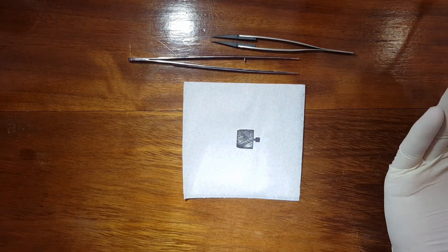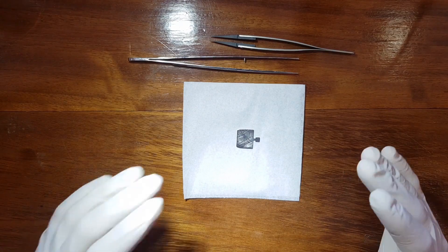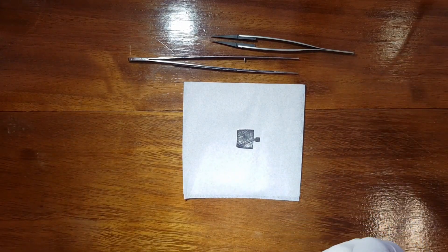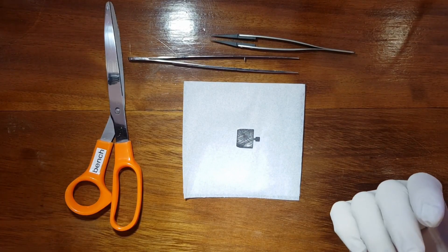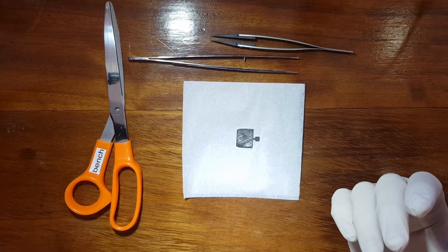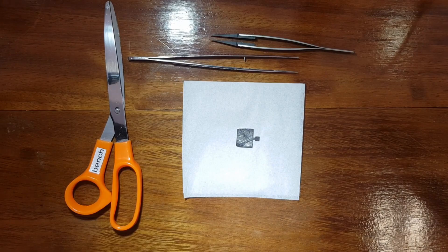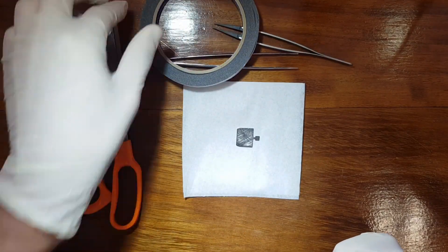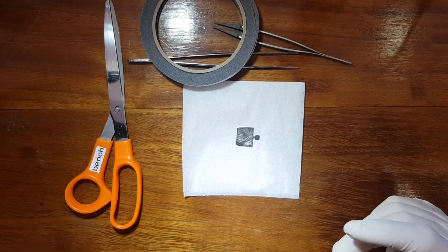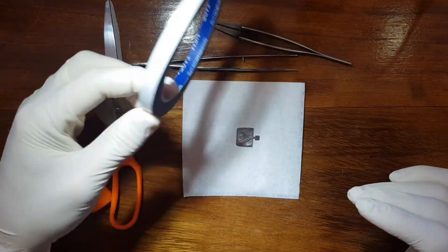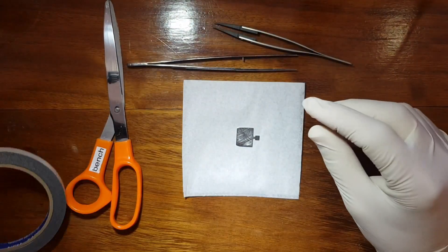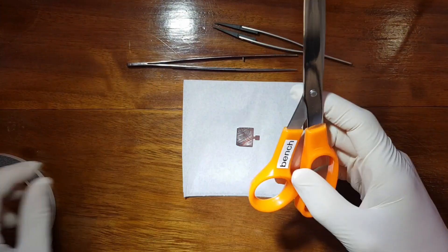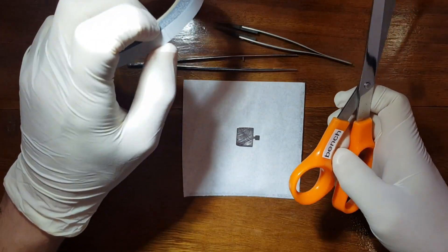Before we can do that we have to prep the samples, which is the core of this video. Extra tools we'll need are a scissor and the most important part, carbon tape. You know, the kind of thing you find in the kitchen sink cupboard.